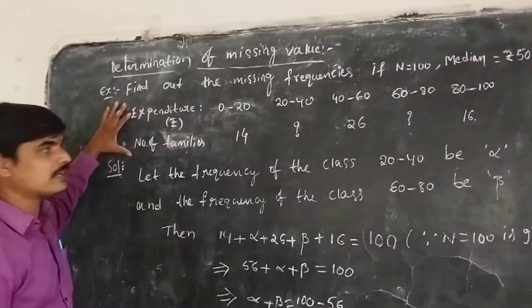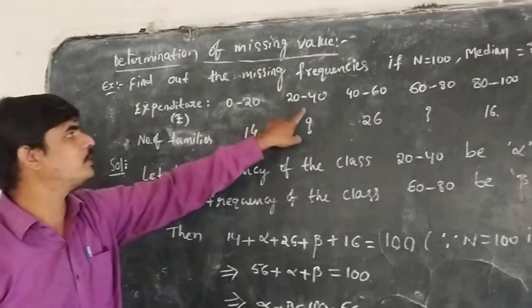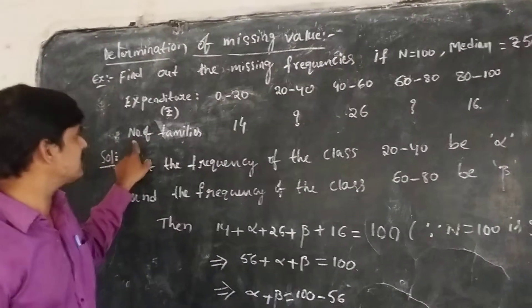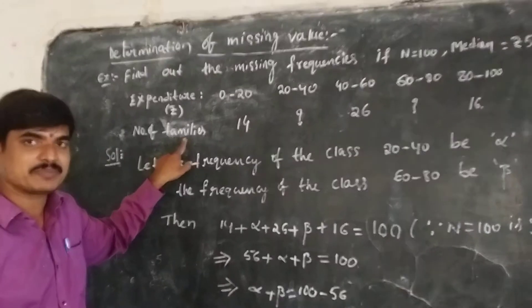This is the given data. Expenditure is given in rupees: 0 to 20, 20 to 40, 40 to 60, 60 to 80, 80 to 100.